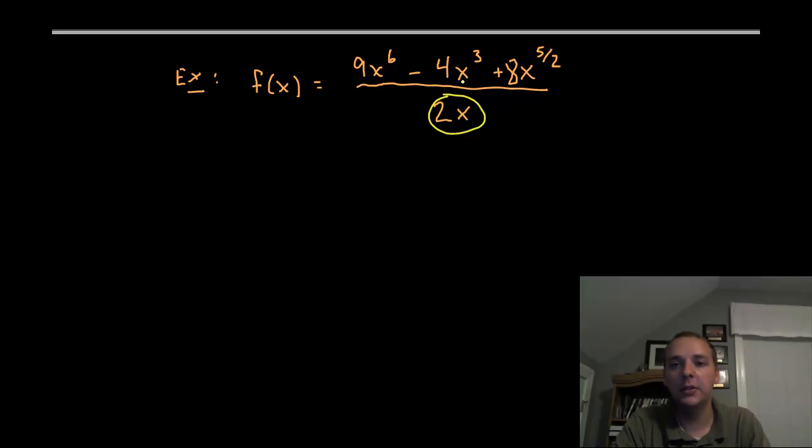Whenever you have a function divided by a monomial, that's a single term like two x, you can use algebra and simply break this apart into three separate pieces before we differentiate. Again I've said this before but one of the main things we have to be good at when taking derivatives is rewriting ugly functions to match some of the limited rules that we have for derivatives.